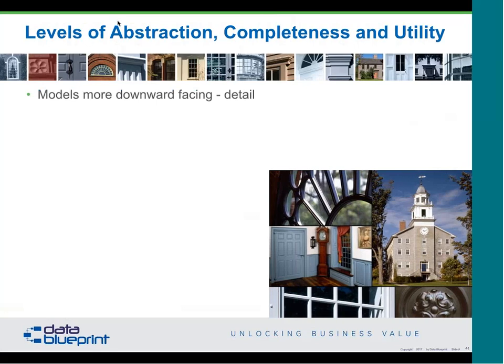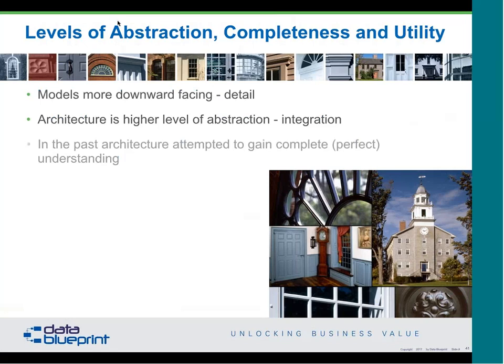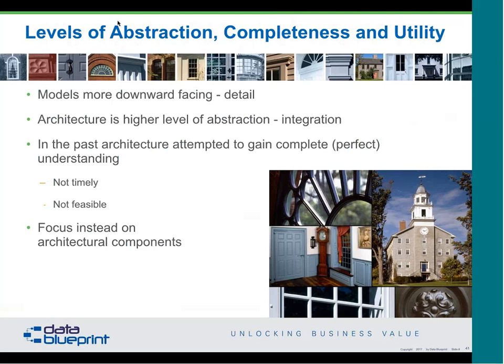Architecture helps us transcend levels of abstraction, understand whether something is complete, and get utility from it — so that when I need to change the air conditioning vents, I can actually do it. The models are more downward-facing in detail; the architecture is the assembly of models and is more of an integration function. In the past we tried to get this perfect understanding, but it was not timely or feasible. We need to look at specific components governed by something like the Zachman Framework to give us more immediate utility.